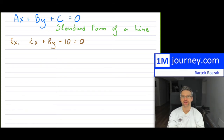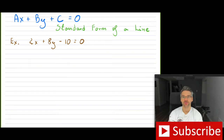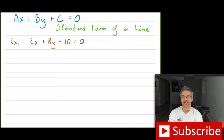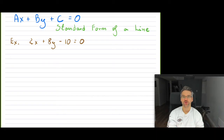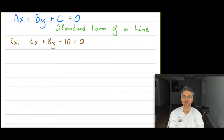Hi everybody. Welcome to our next video with regards to lines. This one is going to be on the standard form of a line, which is AX plus BY plus C is equal to zero, and we're working with X and Y coordinate systems. I hope that you have watched or do understand the slope-intercept form — that is Y equals MX plus B. I'm going to provide a link just above so you can watch it if you haven't studied it before, and then come back to this one.